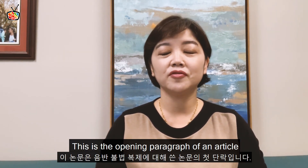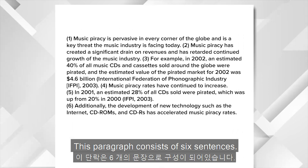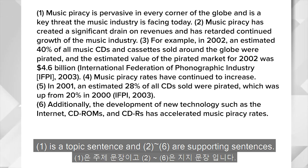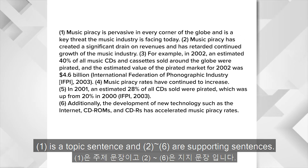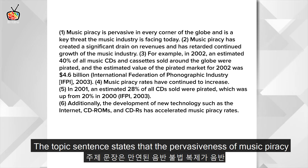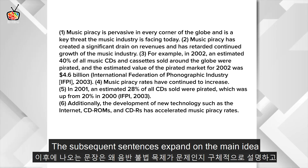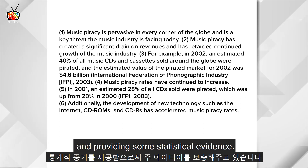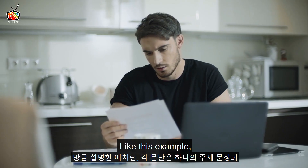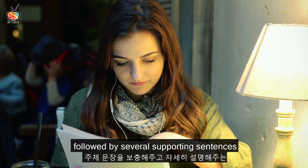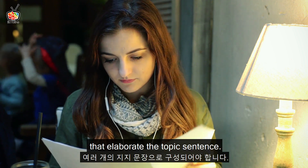Here is a sample paragraph from an earlier work of mine — an opening paragraph of an article I wrote about music piracy. As you see on the screen, this paragraph consists of six sentences. The first sentence is a topic sentence and sentences two through six are supporting sentences. The topic sentence states the pervasiveness of music piracy is an issue in the music industry. The subsequent sentences expand on the main idea by describing why it is an issue and providing statistical evidence. Like this example, each paragraph should be structured with one topic sentence followed by several supporting sentences that elaborate on it.